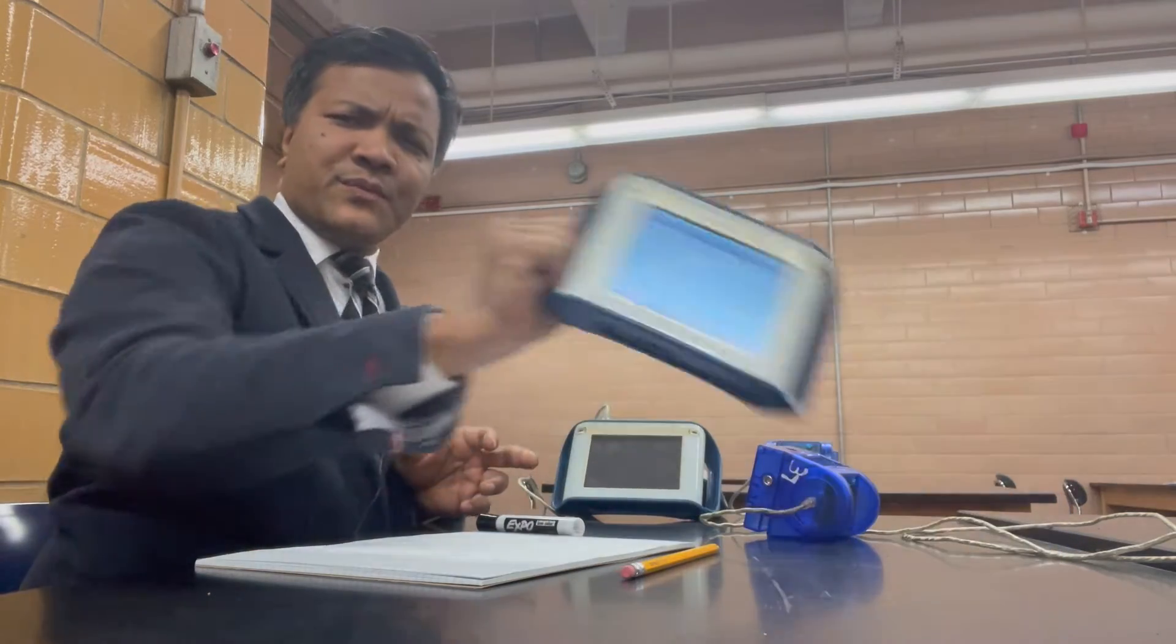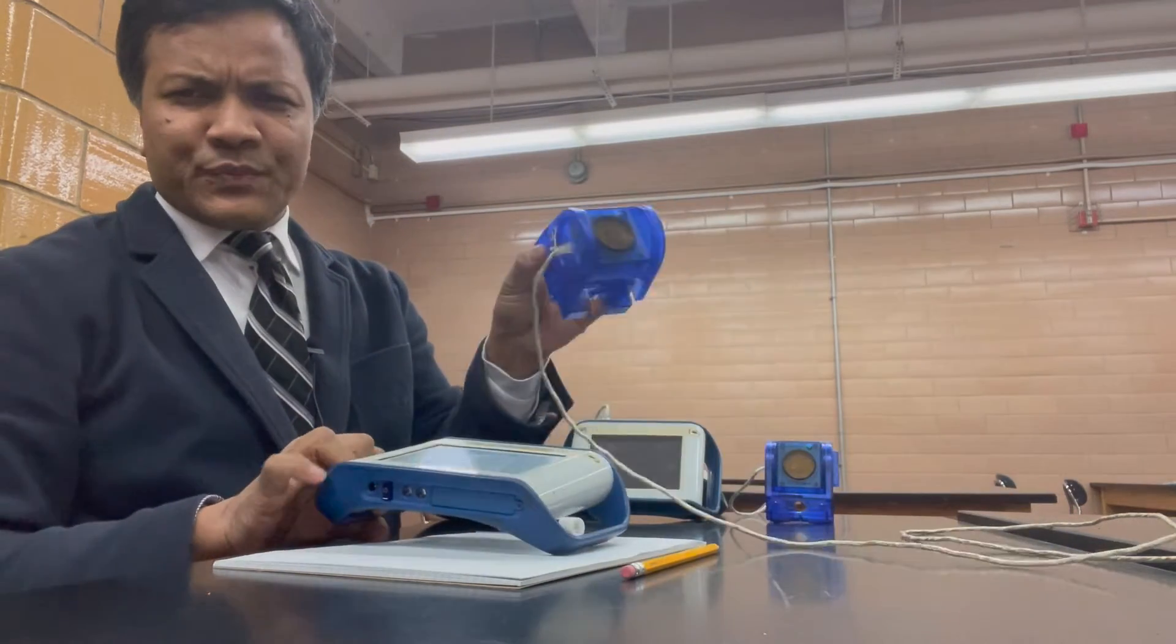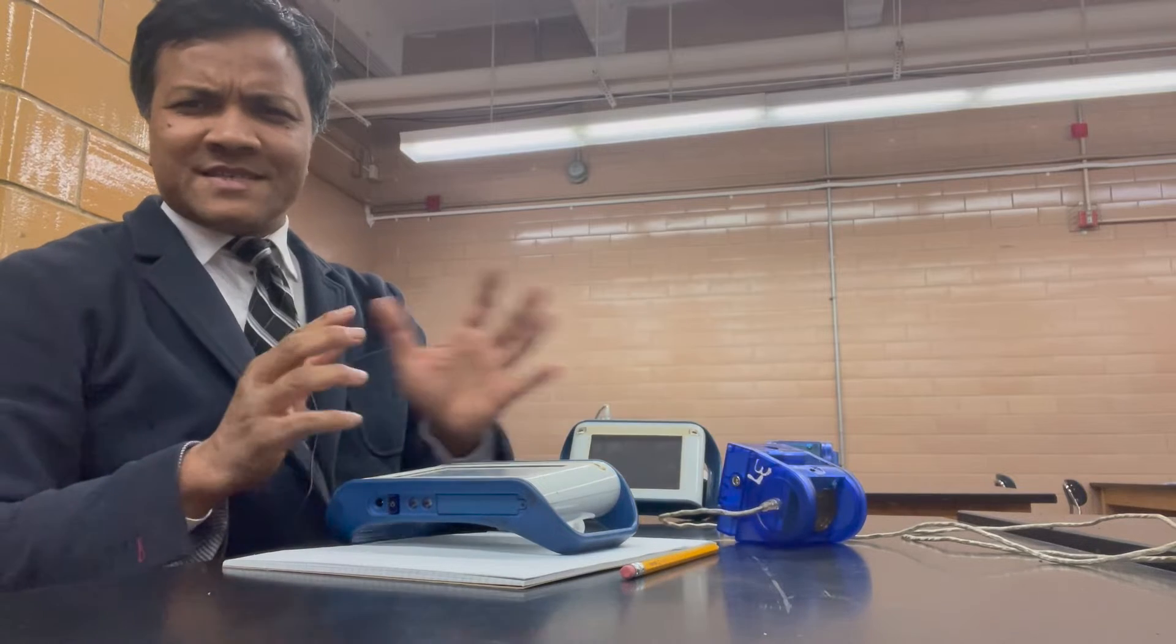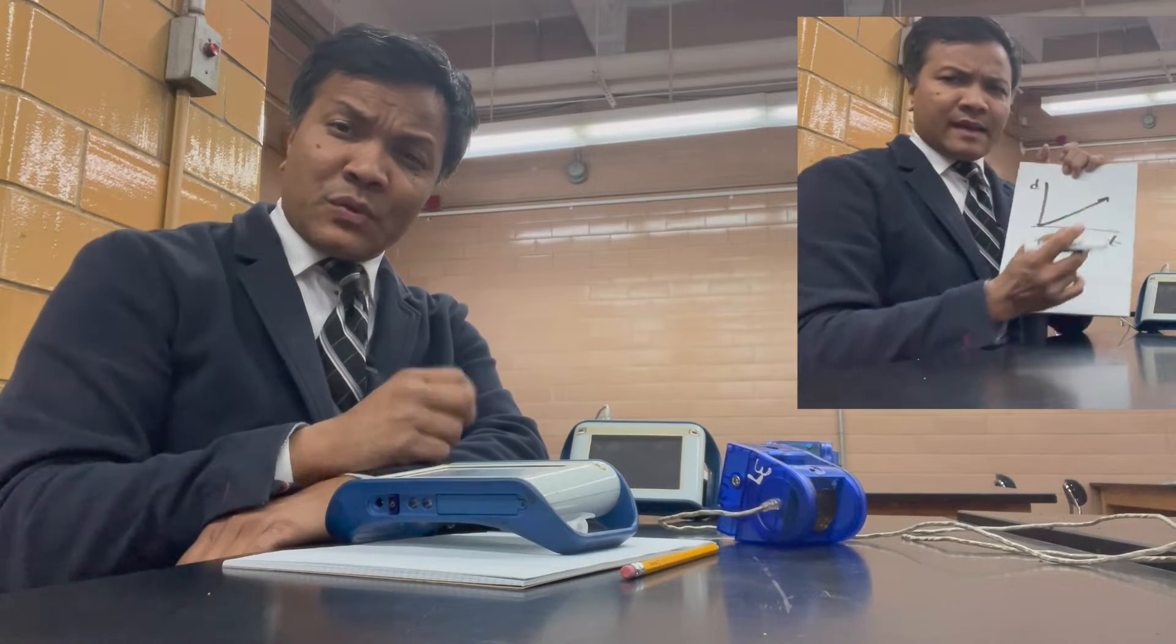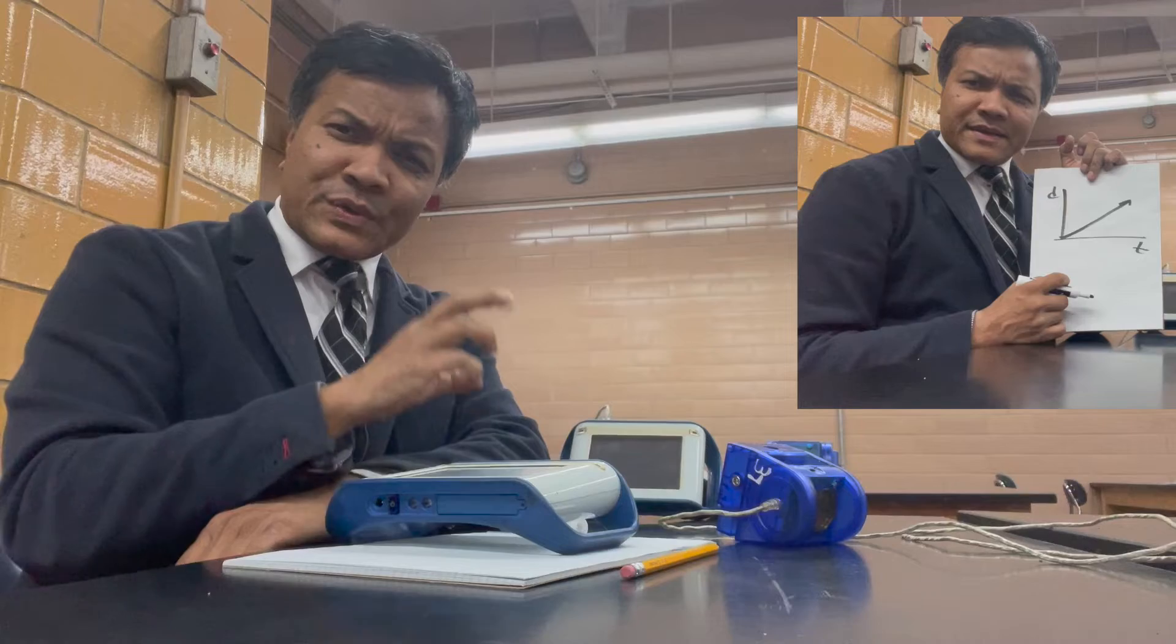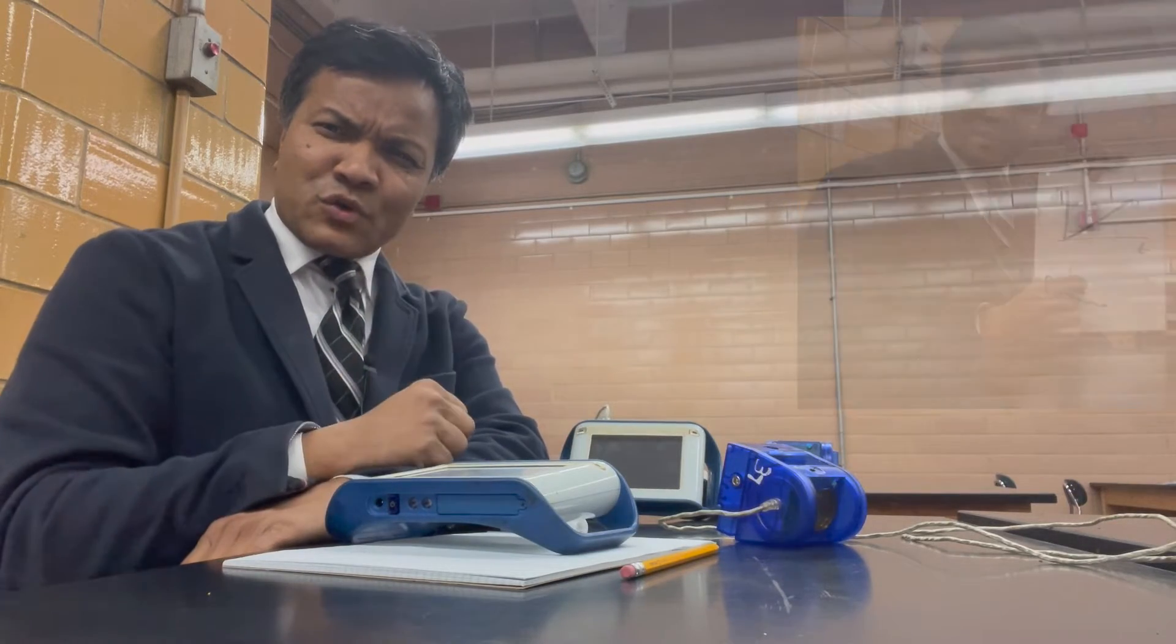In this lab we're going to use this Spark View motion sensor to understand two main concepts: number one, how to explain a DT graph, and number two, what to do to create different types of motion.